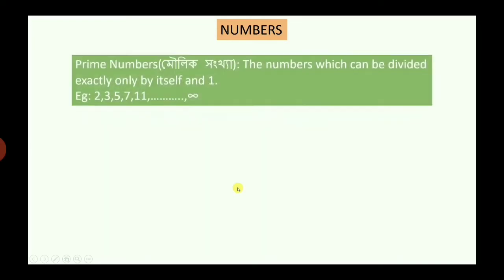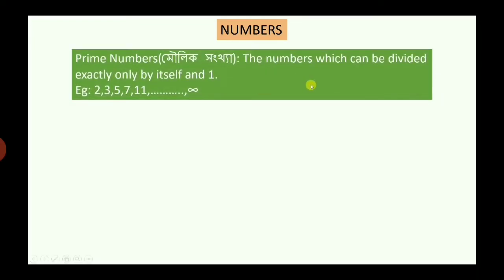The next topic is prime numbers. Prime numbers are numbers which can be divided by themselves and by 1 only. We can add 1 to 2, and we can divide the numbers accordingly.